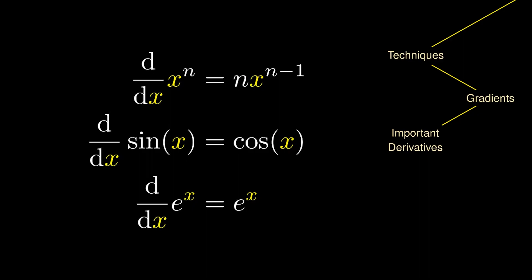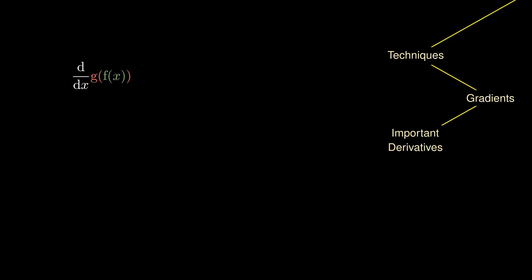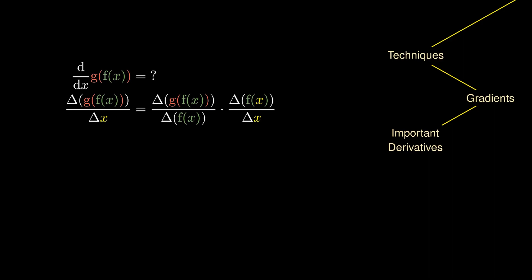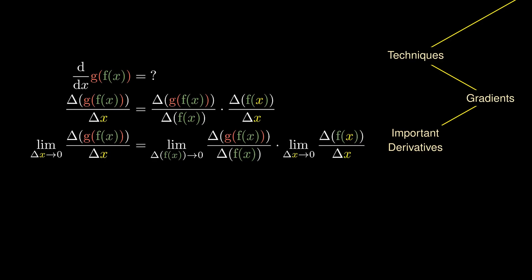A natural question to ask is: if we have a composite function — that is, the function f being plugged into the function g — what is its derivative? Following the definition of gradients, we consider the rise, which is the change of g(f) over the run, which is the change of x. We rewrite this fraction as the change in g(f) divided by the change in f, times the change in f divided by the change in x. As the change in x approaches zero, the change in f also approaches zero. On the left side, we obtain the derivative of the composite function g(f). On the right side, the first term simplifies to g'(f) and the second term simplifies to f'(x).